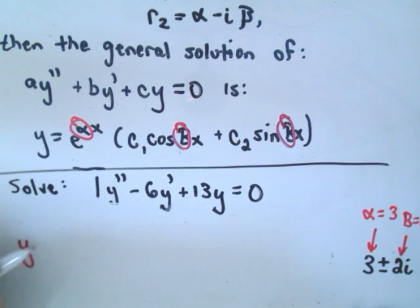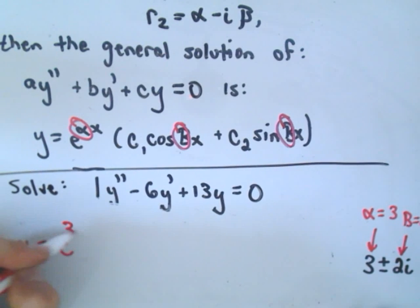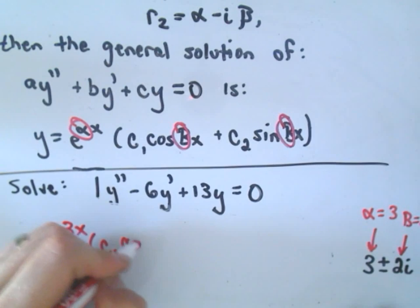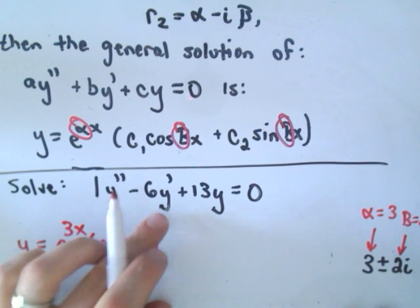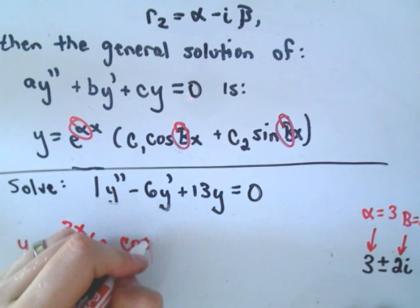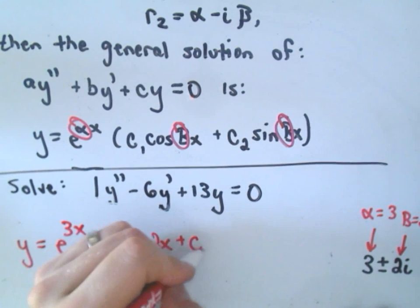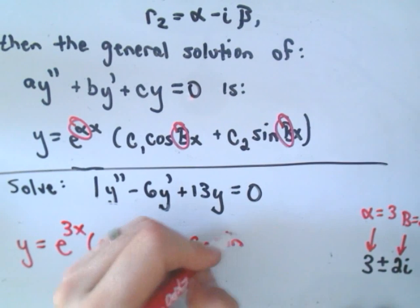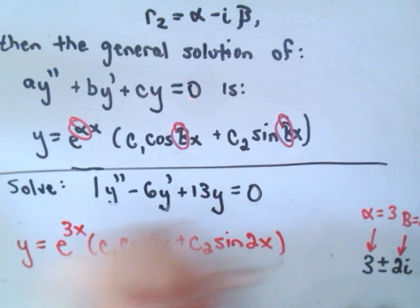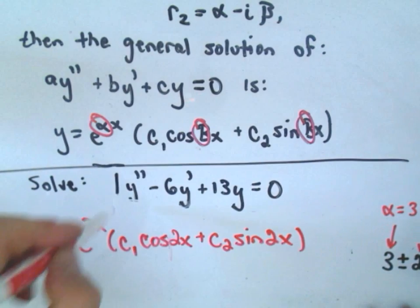Our solution will look like e^(3x) times C₁cos(2x) + C₂sin(2x). And ta-da, we now have our general solution.